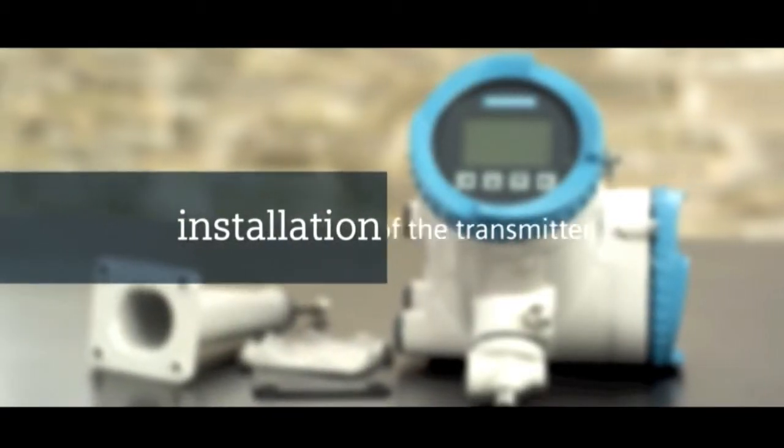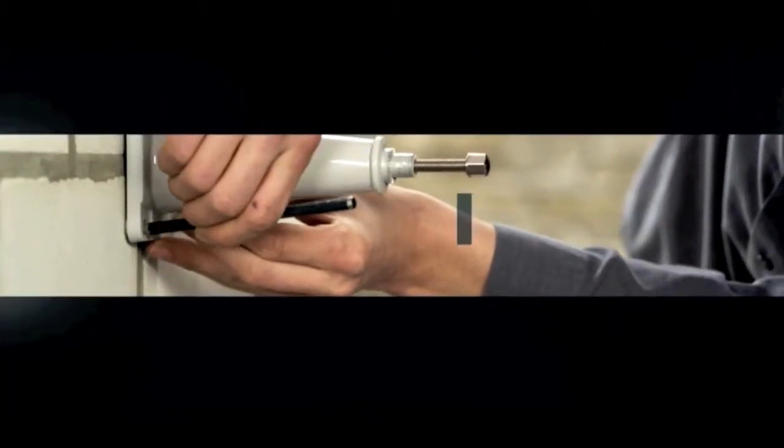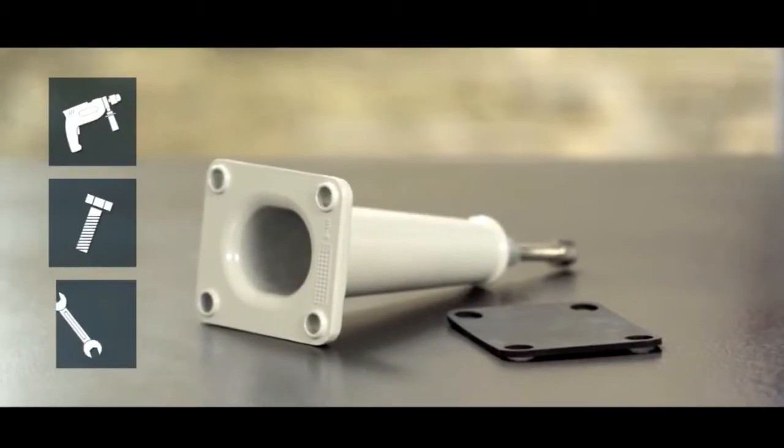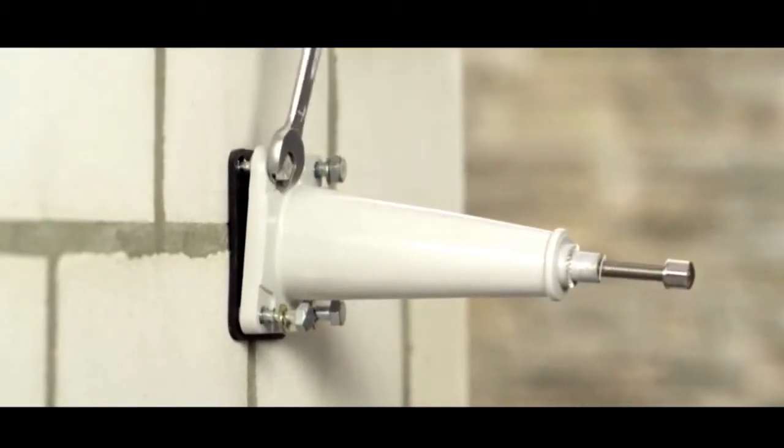The transmitter can be mounted on a wall as well as on a pipe. For wall mounting, mark the pre-drilled holes of the bracket on the mounting surface. After drilling, the bracket and the cushion pad can be mounted.